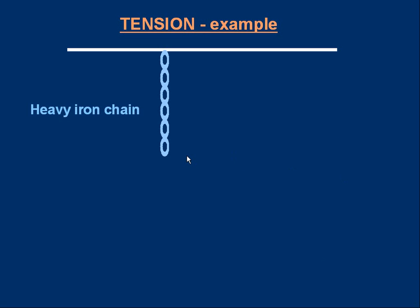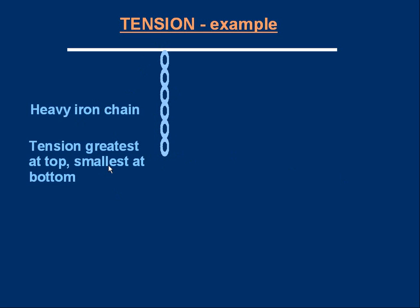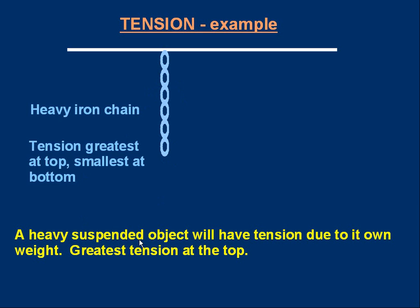Now think of something that isn't light — a heavy iron chain hanging from the ceiling. Think about how the tension depends on position: will the tension be the same all the way along, or higher in some places than others? The tension is greatest at the top and smallest at the bottom. The reason is simple: the top link of the chain is supporting the weight of all the other links underneath, but the bottom link is not supporting any weight at all. In general, a heavy suspended object will have tension due to its own weight, and the greatest tension is at the top.